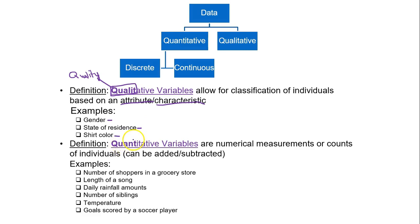Next is quantitative. If you look at the beginning of the word, you see the word quantity. That's exactly what quantitative variables are. They represent a quantity. They are numerical measurements or counts of individuals. They are values that can be added or subtracted. And there is significance in that sum or difference. So like number of shoppers in a grocery store, length of a song, how much rainfall you have in a day, how many siblings someone has, the temperature, and goals scored by a soccer player. Those are all examples of quantitative variables. They are either counts or measurements.